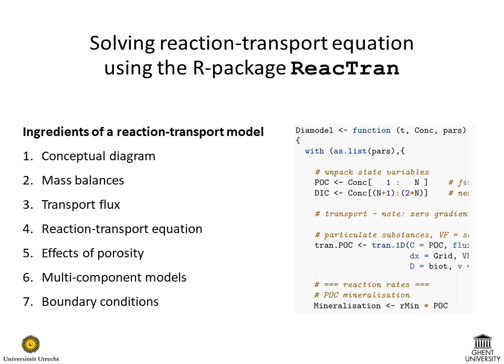In previous videos we have explained all ingredients of reaction transport modeling in porous media. Here we will explain how this is done in practice using R and the package reactran. We will use a relatively simple example and highlight the most important steps in the process of creating a one-dimensional reaction transport model.